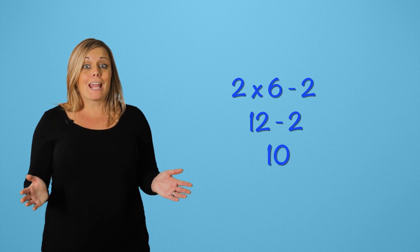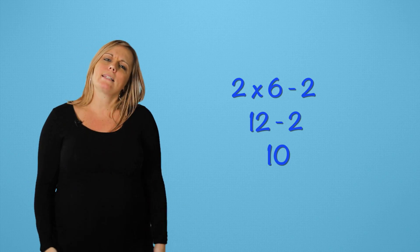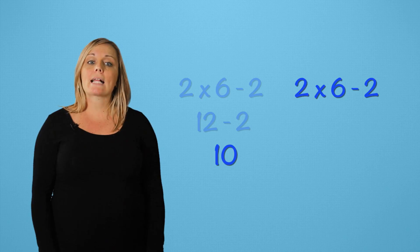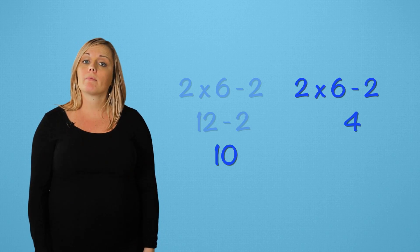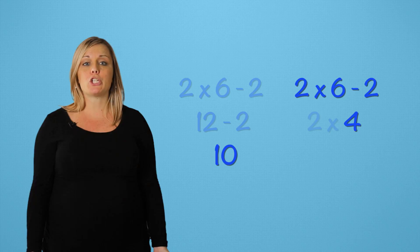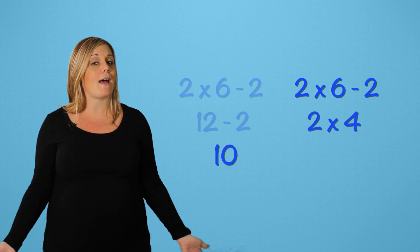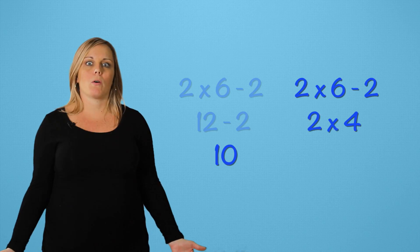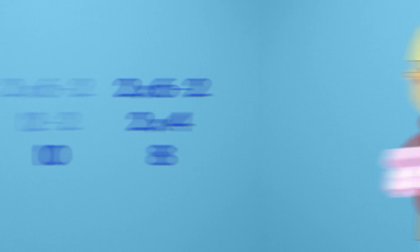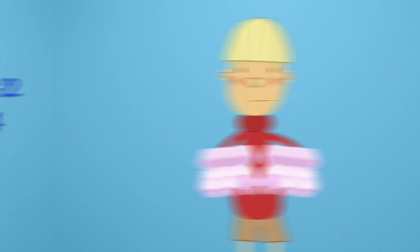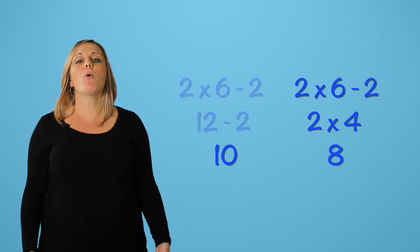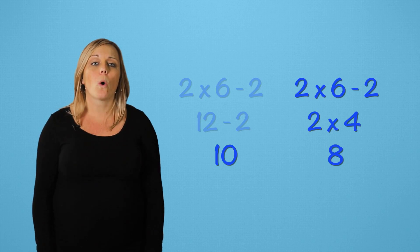But, if we subtract first, what happens? Let's see. We subtract 6 minus 2 and we get 4. Then, we multiply 2 by 4 and get... Uh-oh. We get 8. Is that enough eggs to make the cake? That's not the point, Richard. The important thing to remember is that order matters.